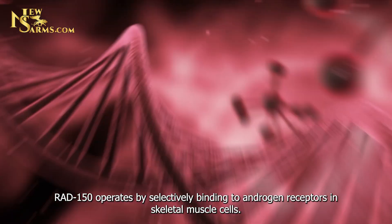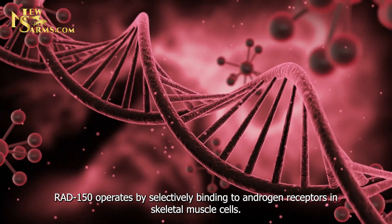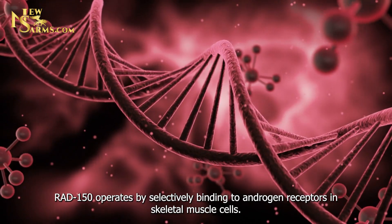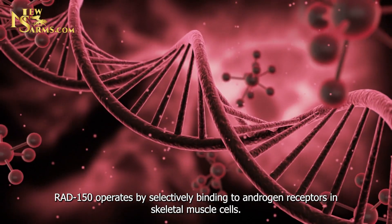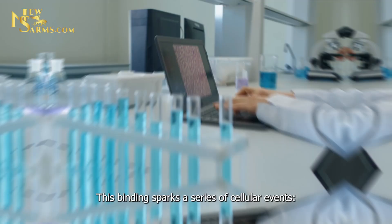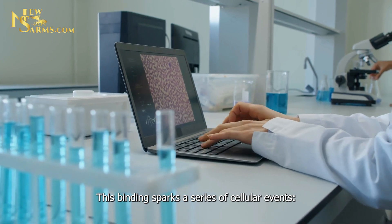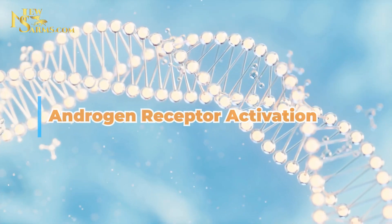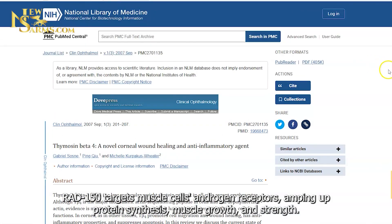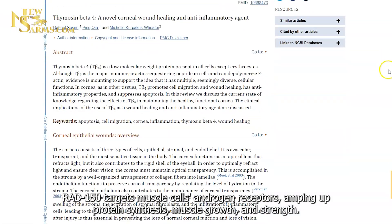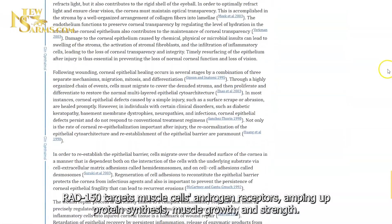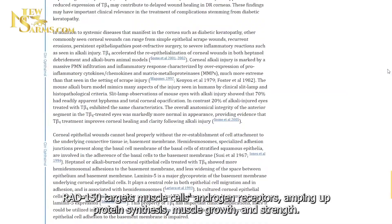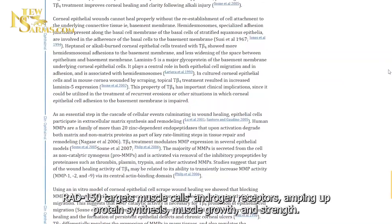Mechanism of action. RAD150 operates by selectively binding to androgen receptors in skeletal muscle cells. This binding sparks a series of cellular events. A: Androgen receptor activation — RAD150 targets muscle cells' androgen receptors, amping up protein synthesis, muscle growth, and strength.